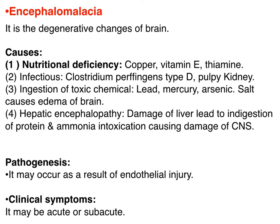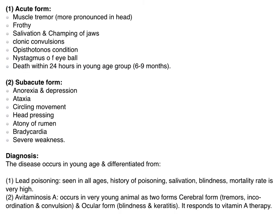The pathogenesis occurs as a result of endothelial injury. Clinical symptoms may be acute or subacute. The acute form includes muscle tremors, salivation, tonic convulsion, opisthotonus, and nystagmus of the eyeball, with death within 24 hours. The subacute form includes anorexia, depression, ataxia, circling movement, head pressing, bradycardia, and severe weakness.